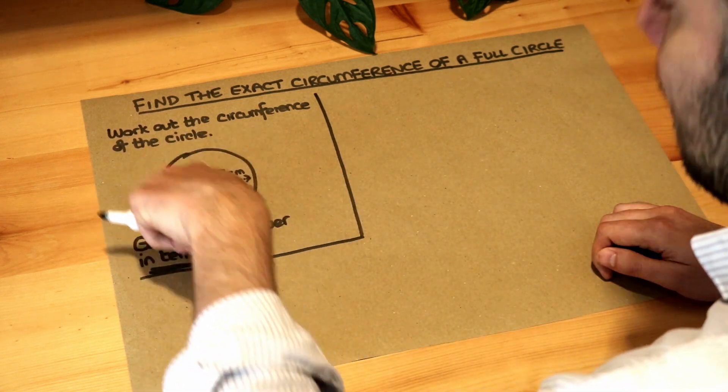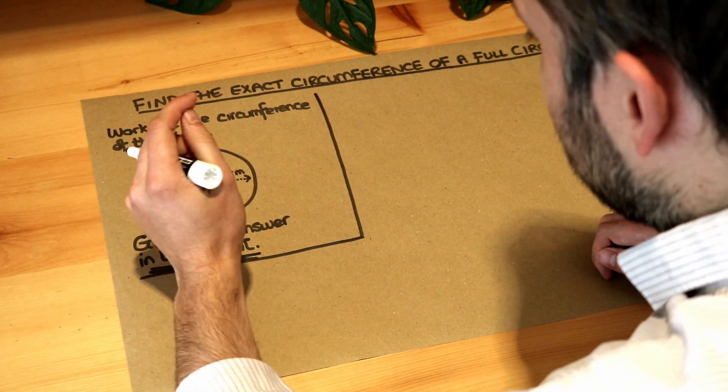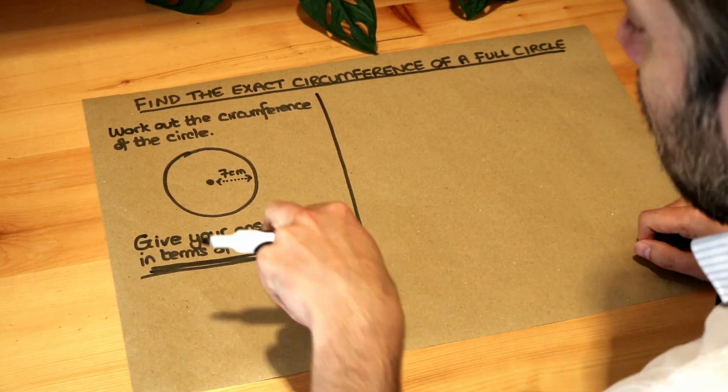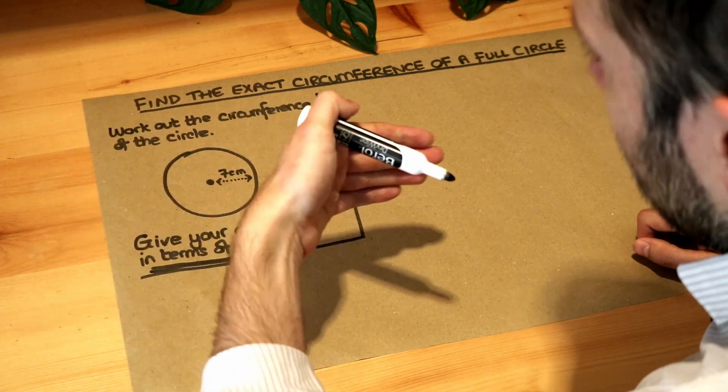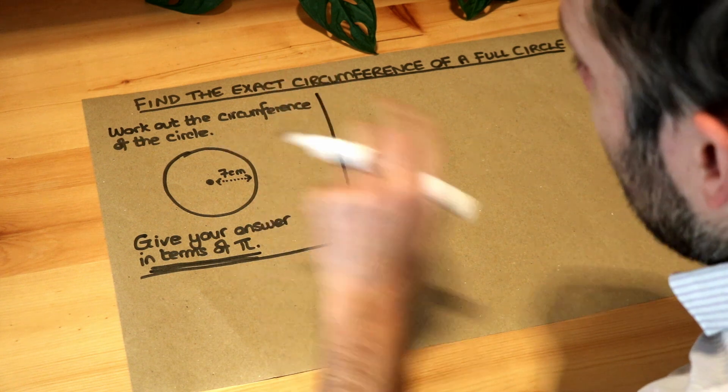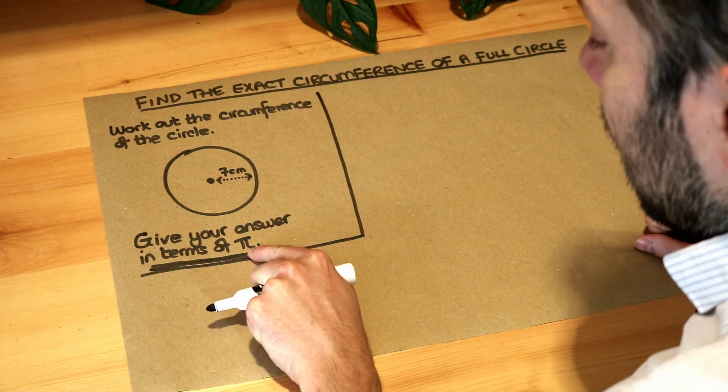Rather than giving the perimeter as a decimal, like 10.4 cm or something, we want to give the answer in terms of pi. What that might look like is something like 10 pi. So that would be 10 lots of pi or 3 pi. We want to keep the answer exact by keeping the pi in the answer.